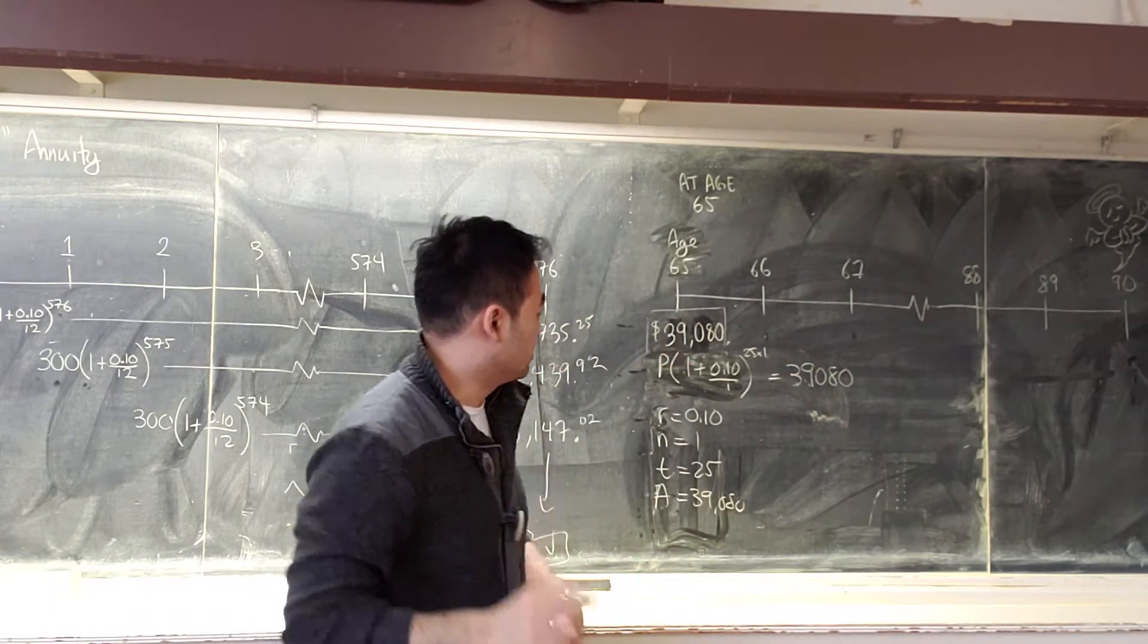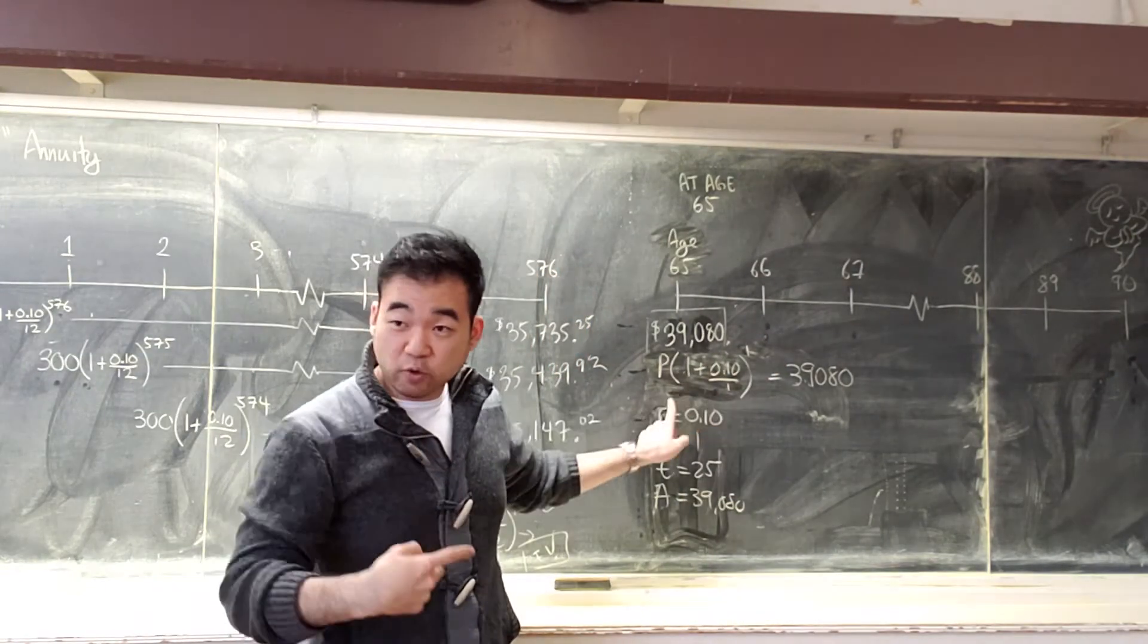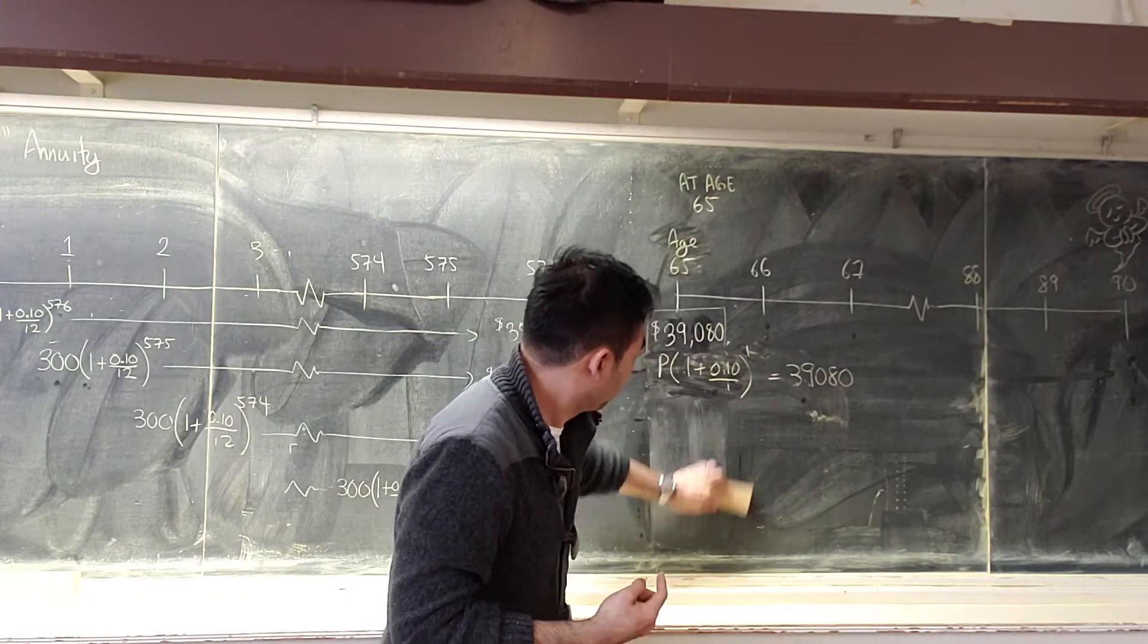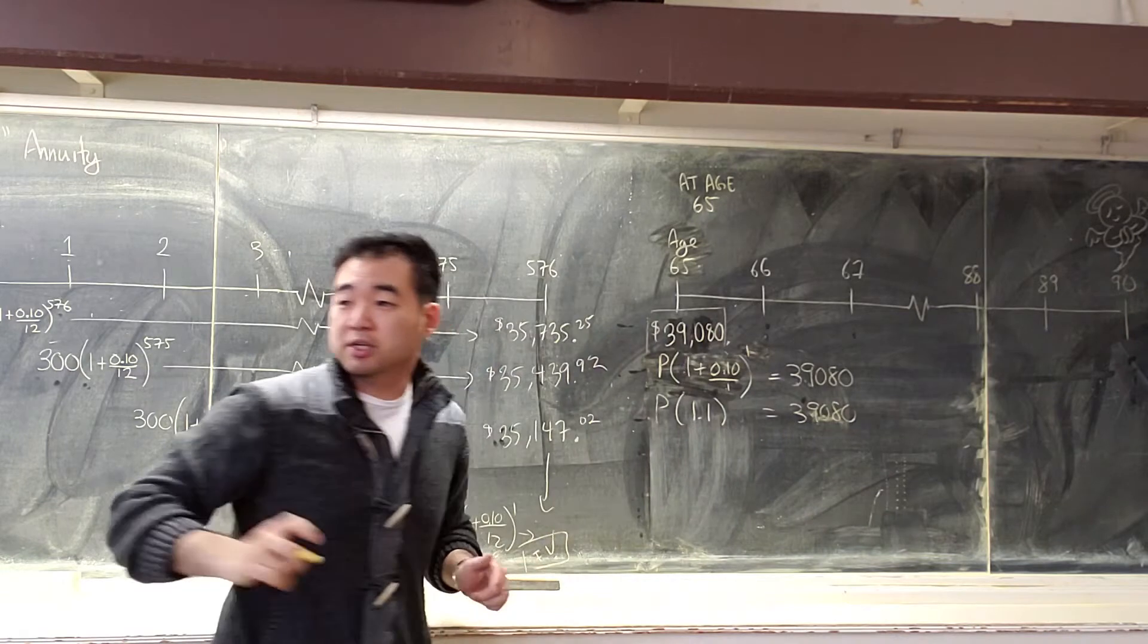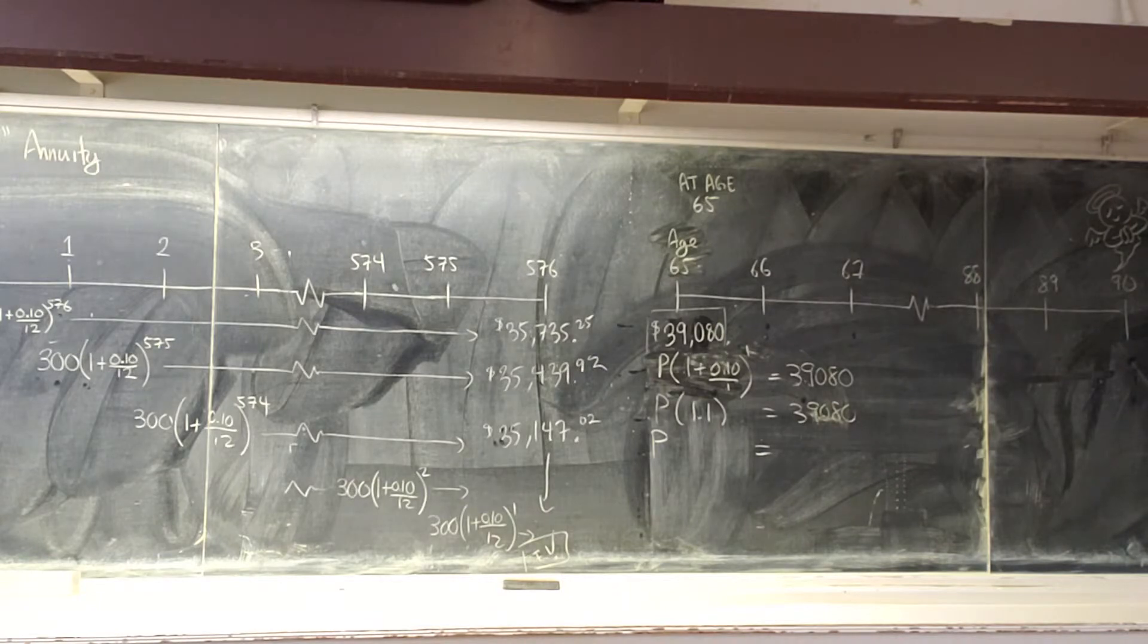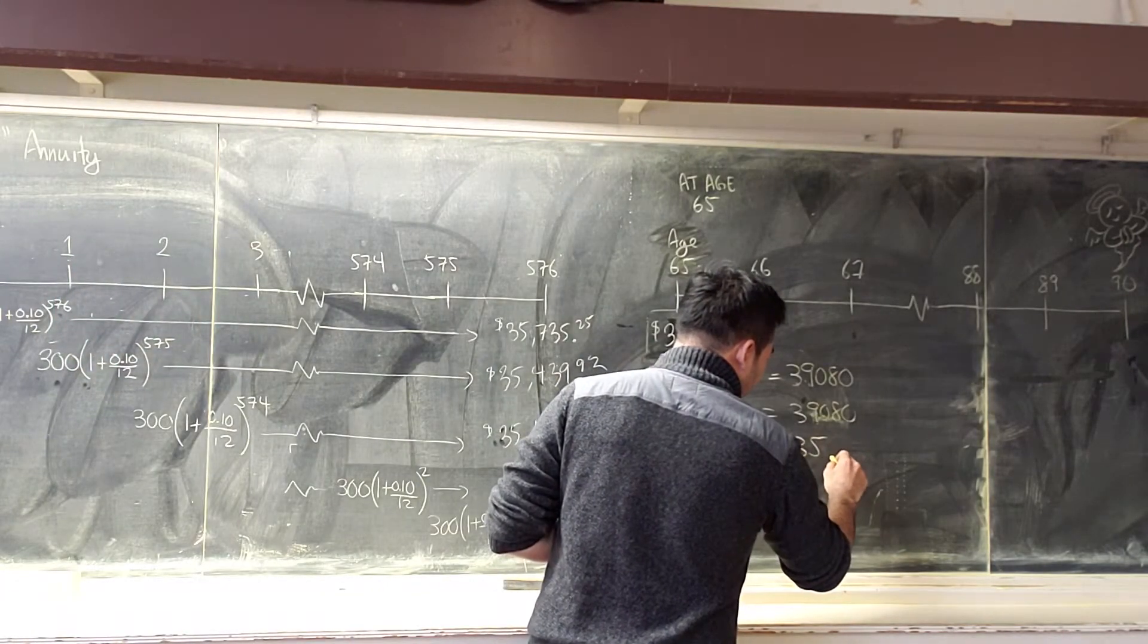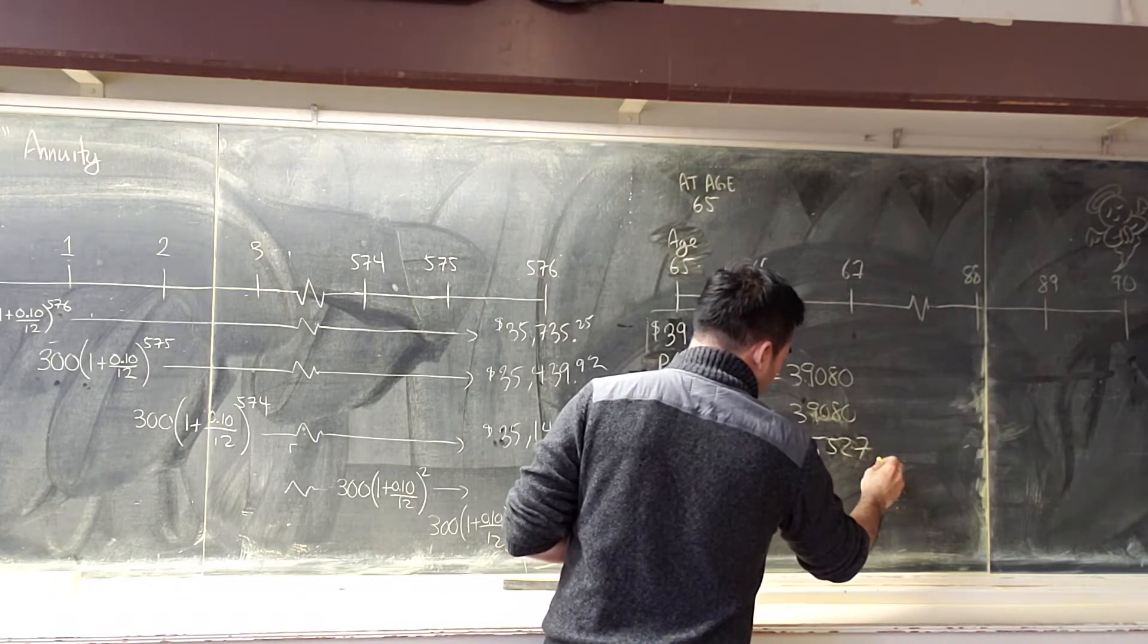My final amount, my total amount needs to be $39,080. So, the question is, what principal multiplied by 1 plus 0.10 divided by 1 to the power of 25 times 1 gives me $39,080? I made a mistake. It's not 25 years right now. I only look for one year. So, if I earn this interest for one year, how much do I need now to get this next year? Someone work that out for me. How do I get P all alone? Divide it by 1.1. Go for it. Take your calculators. 35,527.27. $35,527.27.